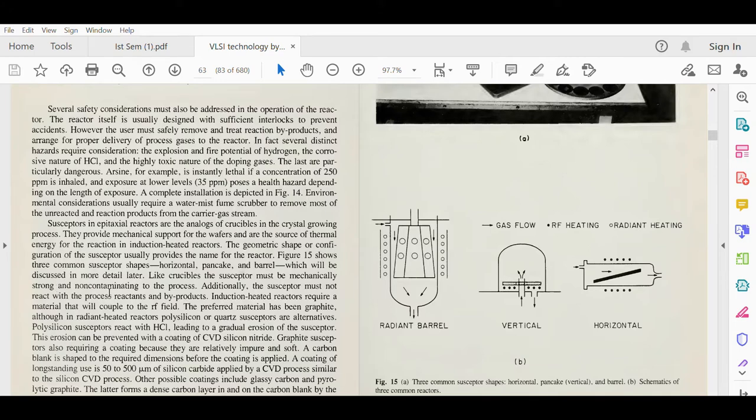Induction heated reactors require material that will couple to the RF radio frequency field. The preferred material has been graphite. Although in radiant heated reactors, polysilicon or quartz susceptors are alternatives. Polysilicon susceptors react with HCl leading to gradual erosion of the susceptor. This erosion can be prevented with a coating of CVD silicon nitride.